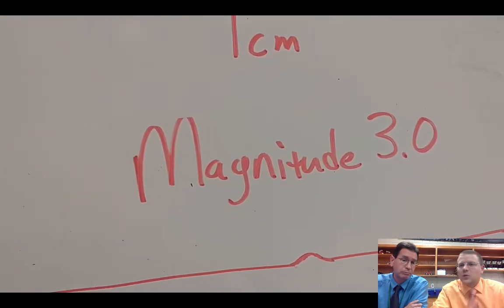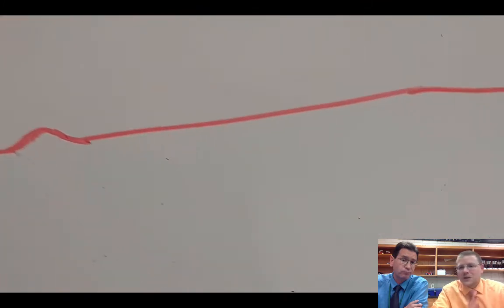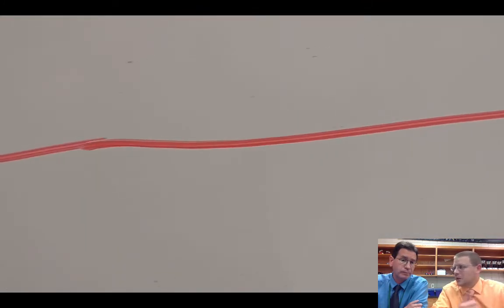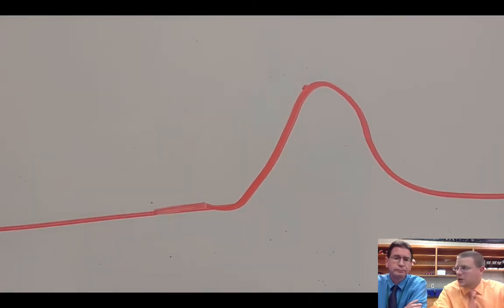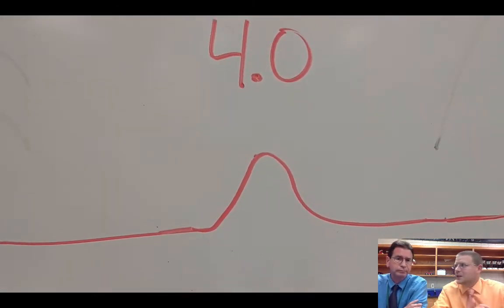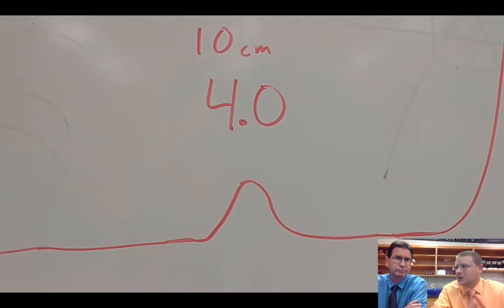But if we go to a 4.0, it's not twice as big. It's not even three times as big. The amplitude is ten times bigger. So we go from a one centimeter height wave to a 4.0, which now has a ten centimeter high wave.